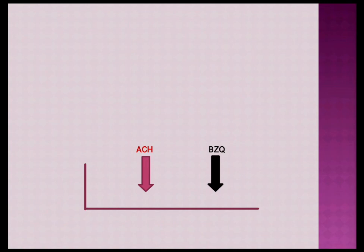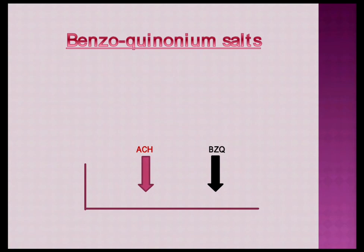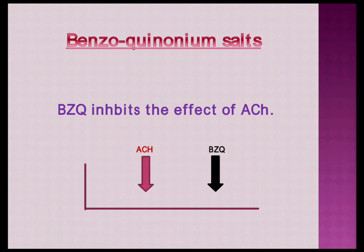After discussing ACh effects, sodium ion effects, and calcium ion effects on ACh, we now take up a particular salt called benzoquinonium (BZQ) salts. Benzoquinonium salts also affect ACh activity. I will show how BZQ affects ACh activity. First, BZQ inhibits the effect of ACh — if ACh is excitatory at a particular concentration and we add BZQ, it will nullify the effect of ACh.